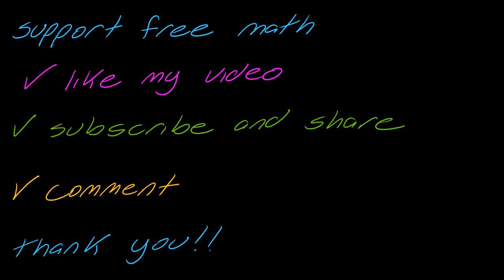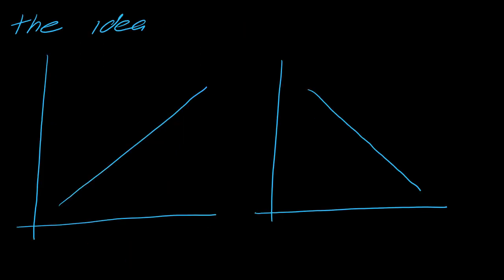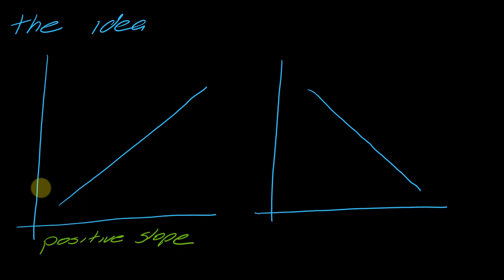So let's get started. I have two lines here just to remind you of something very basic from algebra. This line here — is it a positive or a negative slope? It is positively sloped. So does that mean the function is increasing or decreasing? It means it's increasing.